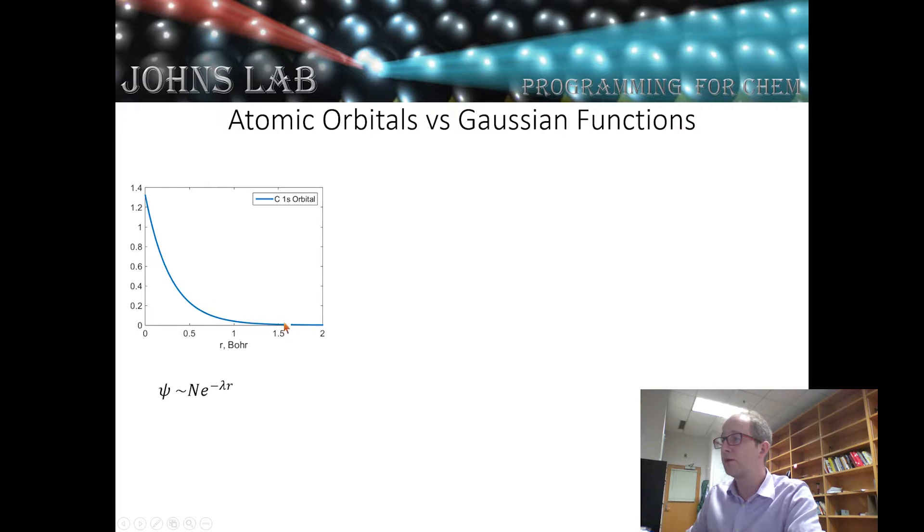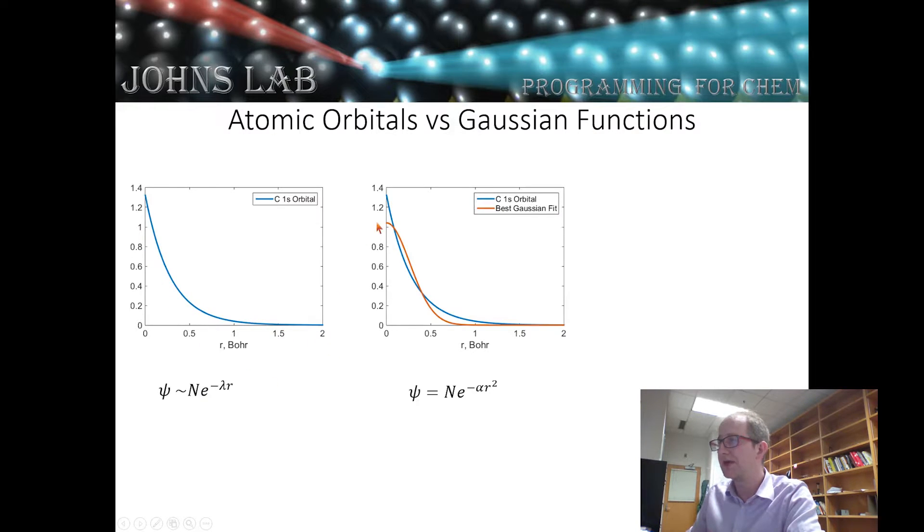So in orange is the best fit to a single Gaussian. In lighter orange or yellowish is if we take six Gaussians together and we add them up and call that one basis function, we get something that decays a little bit more closely to the actual 1s function. It's a little bit more peaked. It's still slightly rounded. We can make this more peaked by adding more Gaussian functions.